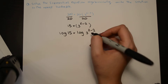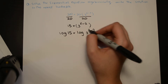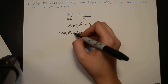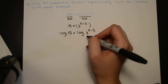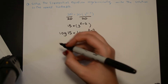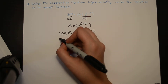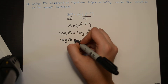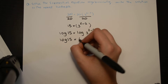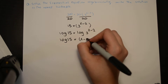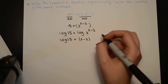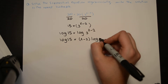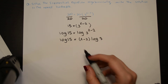Afterward, I need to bring the x minus 2, which is the exponent, in front of log 3 based on the log rules. So I'm going to write log 15 equals x minus 2 times log 3.